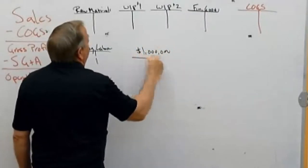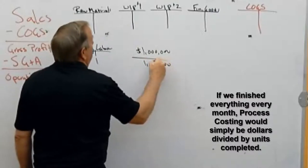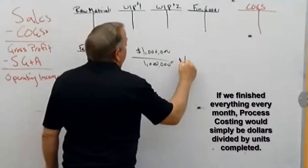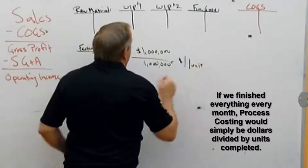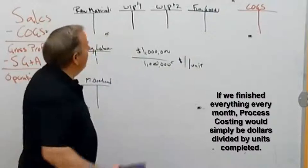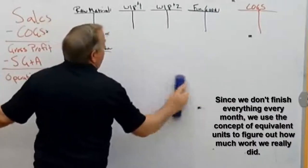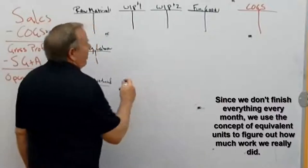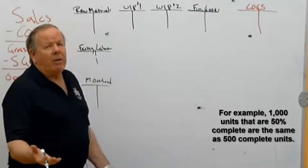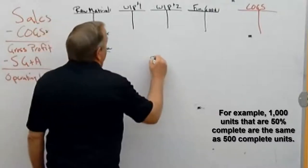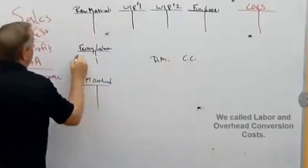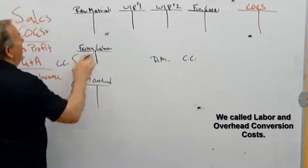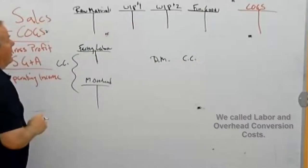It would be easy if we finished everything every month — for example, if we spent a million dollars in process one to make a million units with no beginning or ending work in process, we'd know it was $1 per unit. Unfortunately we don't finish everything every month, so there's beginning and ending work in process. A thousand units that are 50% complete are the same as 500 complete units. We look at this from the perspective of direct materials and conversion costs.